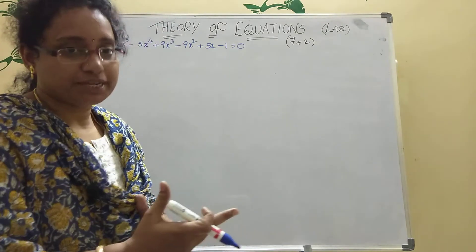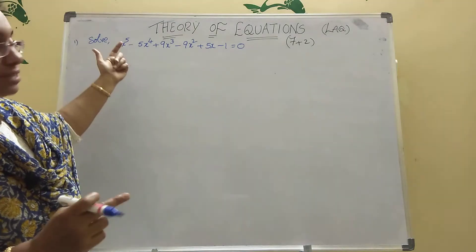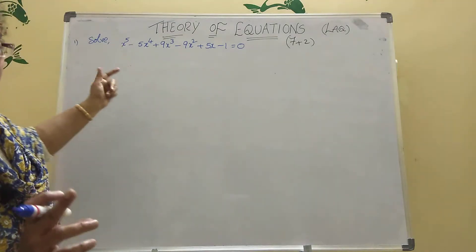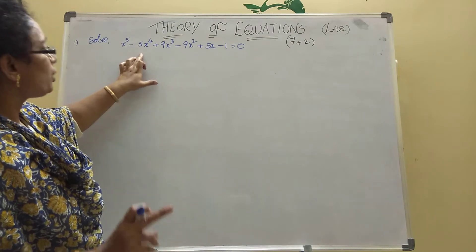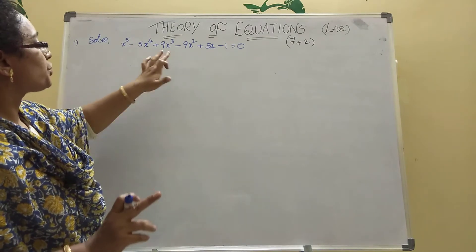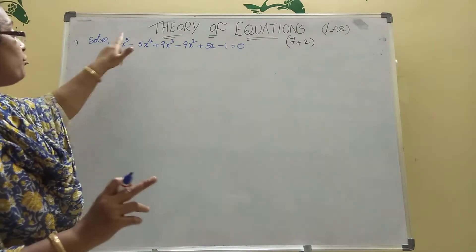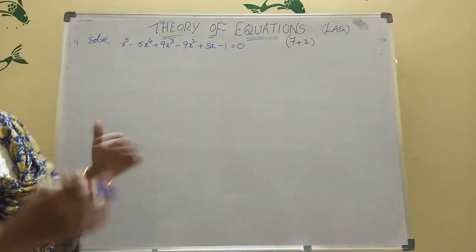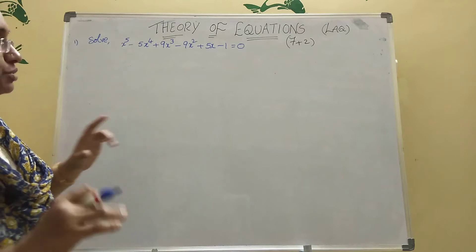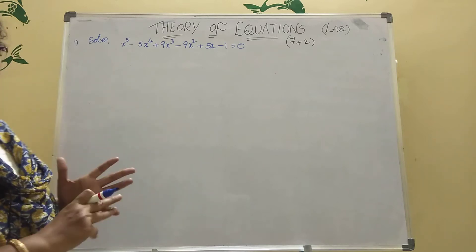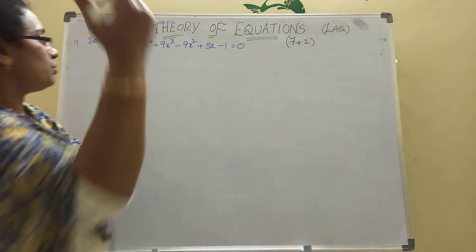Already one video I posted. See this second video — x power 5. Here 7 max problems is very important. The equation is: x^5 - 5x^4 + 9x^3 - 9x^2 + 5x - 1 = 0. Here power 5 is there. See how will you do — is it Class 1 reciprocal or Class 2 reciprocal? Once you compare them you will easily understand.